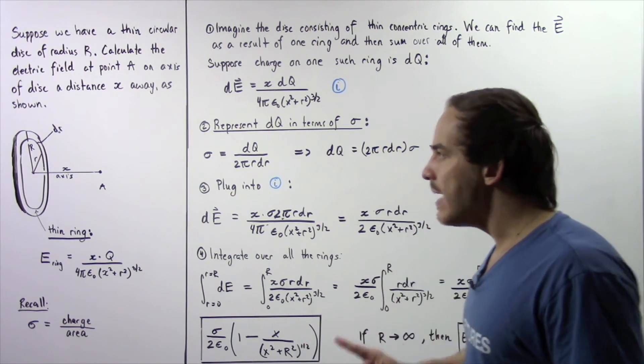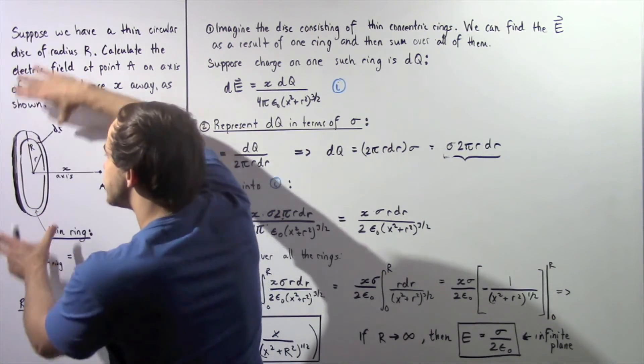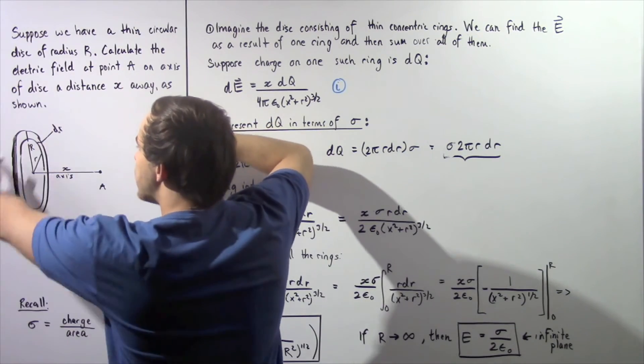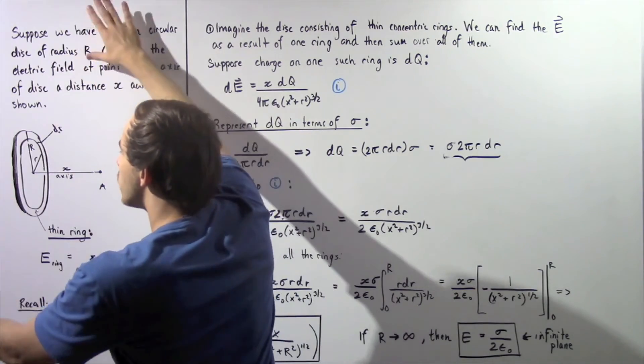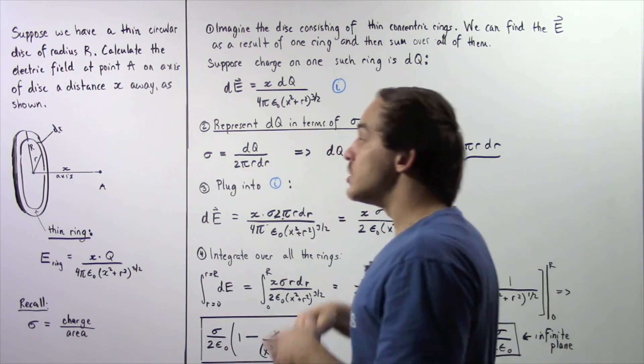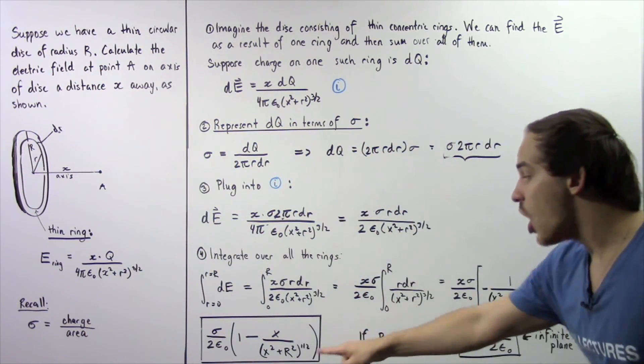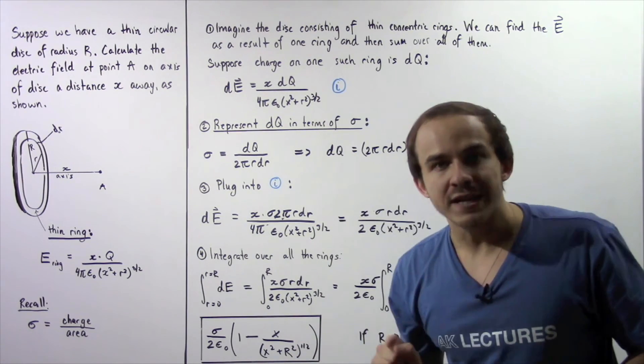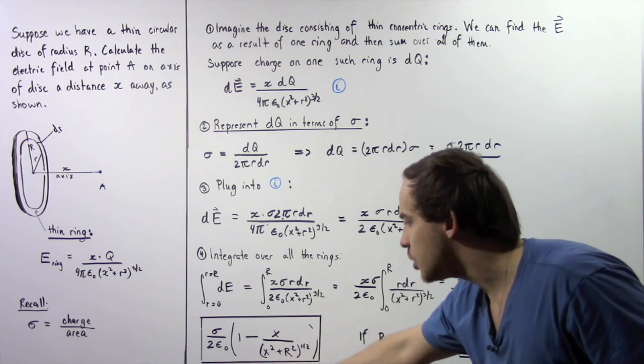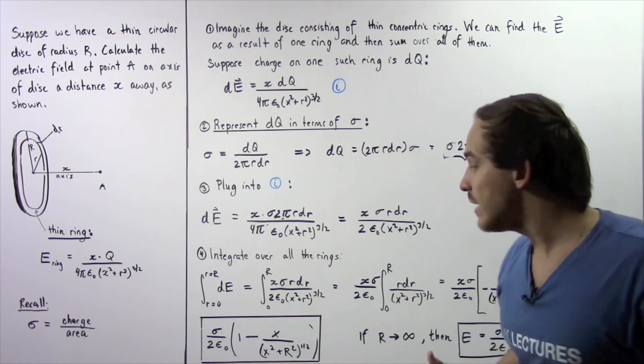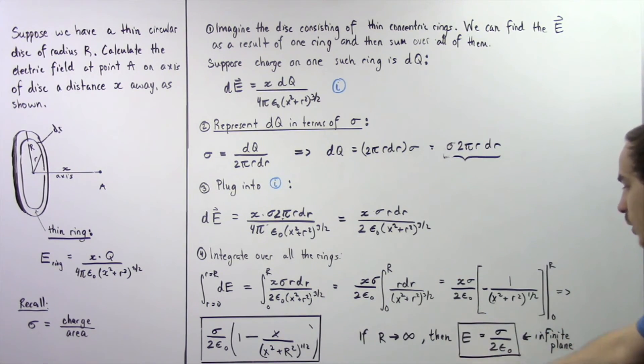Now what happens if this plane expands? Let's suppose that this entire disk expands in all possible directions along the two dimensional plane. So in that case, our R would go to infinity. And if this R becomes large, this whole fraction goes to zero. And we're simply left with the following result.